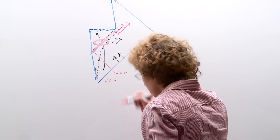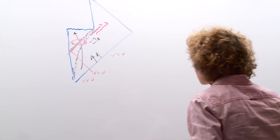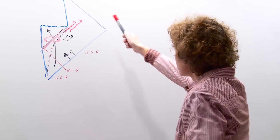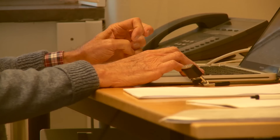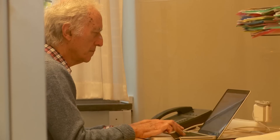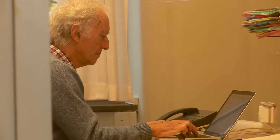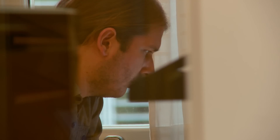Black hole complementarity is a conservative proposal from the point of view of quantum theory, but a radical one in that it requires giving up the notion of locality in space-time, which is central to Einstein's general relativity.